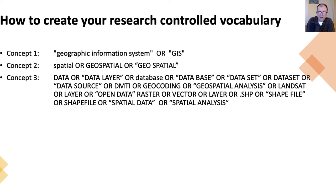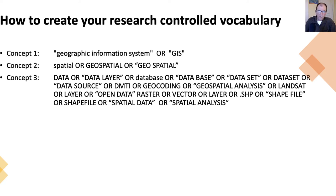DMTI is a kind of dataset, geocoding is a type of analysis used. What we wanted to do was link all those terms together — so spatial data, spatial data layer, spatial database, or geospatial data, or geospatial data layer, or geospatial database. You can see how you can link all these concepts together to get multiple iterations. I'll show you how to do that in a further video, but I just wanted to show how this kind of concept can work out in real life.